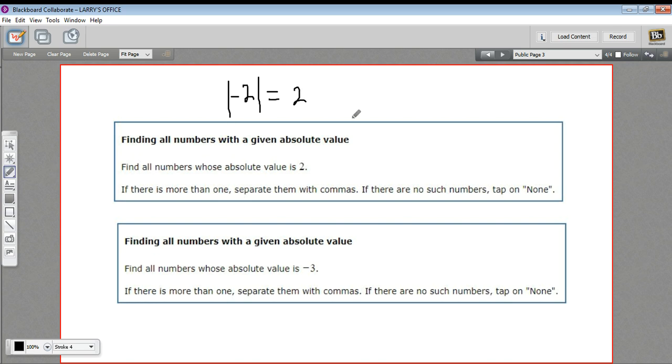So the absolute value of negative 2 is 2. The absolute value of 2 is 2. So you're just getting the number, it's always going to be positive, so you basically ignore any negative signs when you take the absolute value.